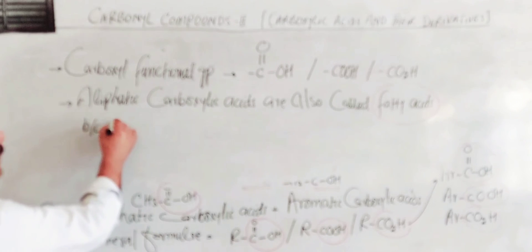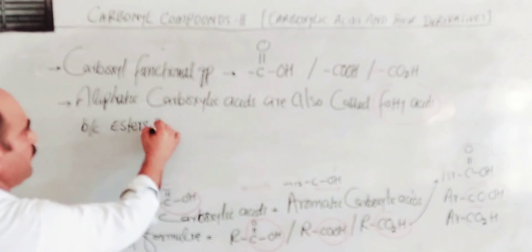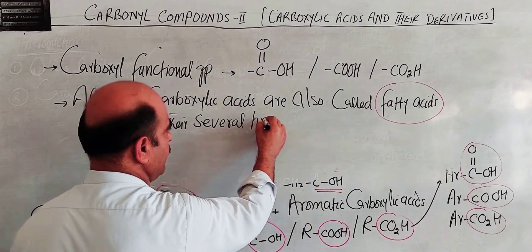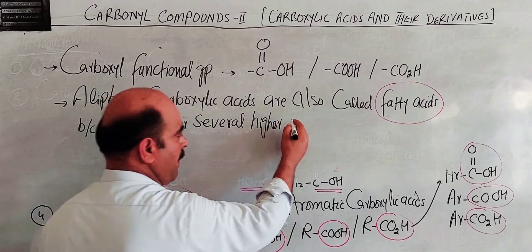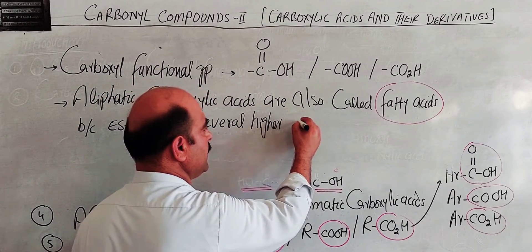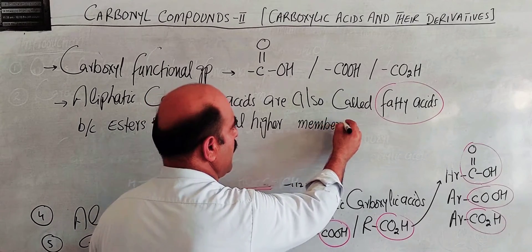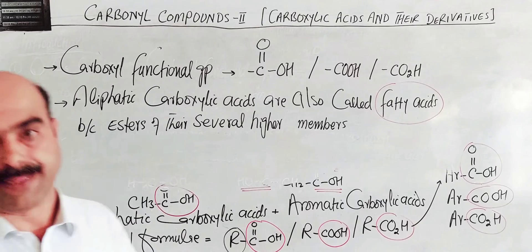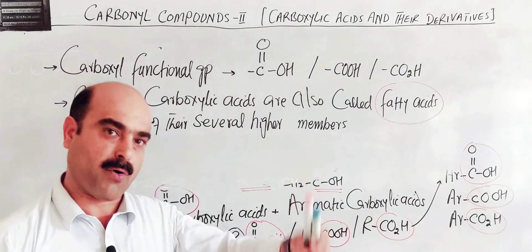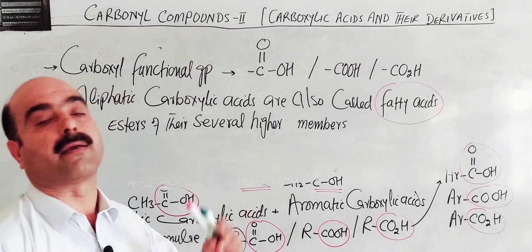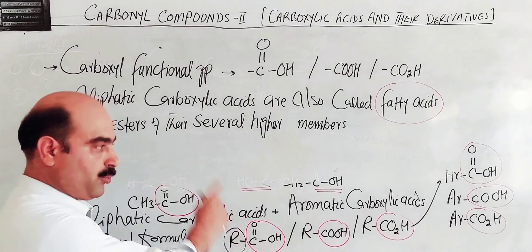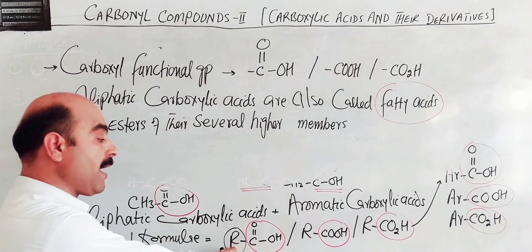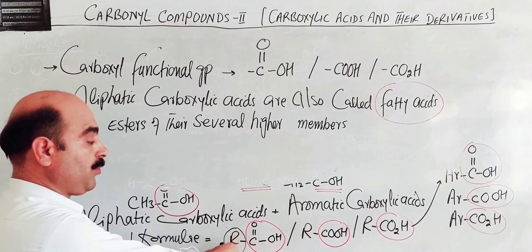One reason is that esters of several higher hydrocarbons yield carboxylic acids. Higher members means that the R-group — the alkyl chain — has 12 or more carbon atoms. The R-group can be methyl, ethyl, propyl, normal butyl, isobutyl, and so on as the chain length increases.